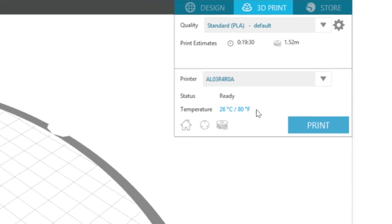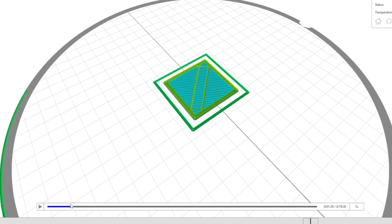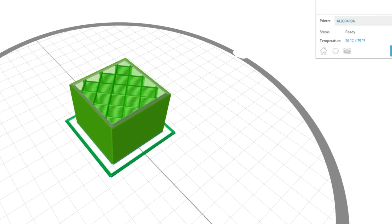Below the rendered object in the software, there is a player bar that you can use to see how the Alta will print the object layer by layer. When you've finished adjusting your print settings, select Print.